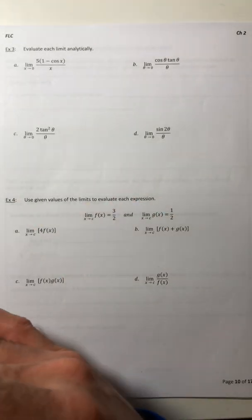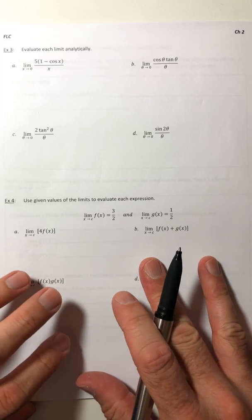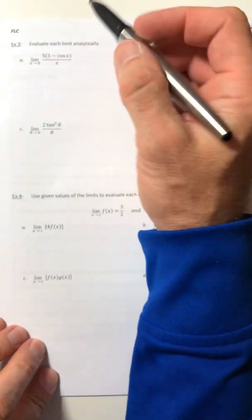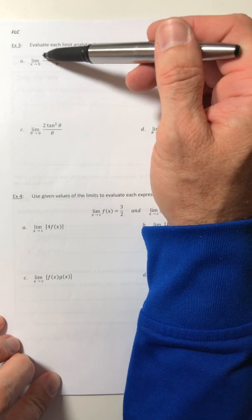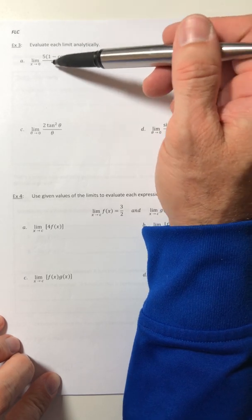So let's see how to use them. You're not going to prove them over and over again, you're just going to use them. So part A, limit as x goes to zero, five times one minus cosine of x over x.